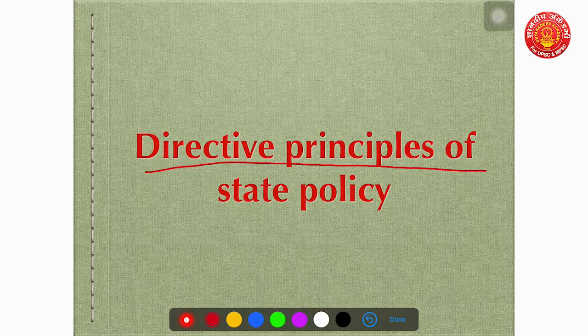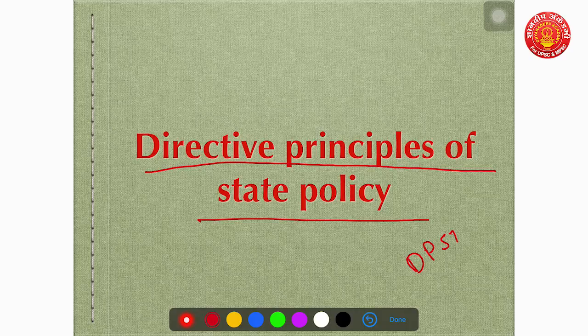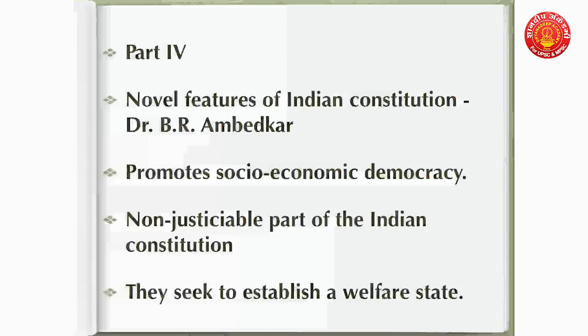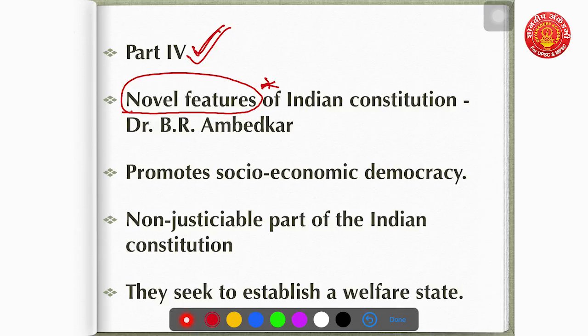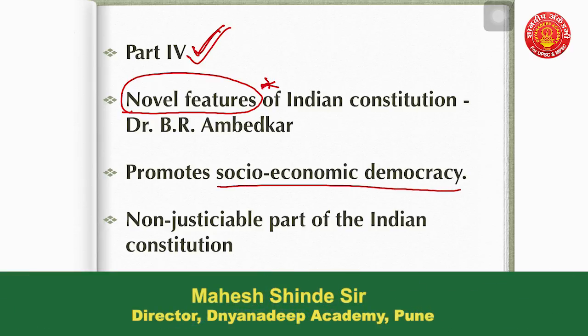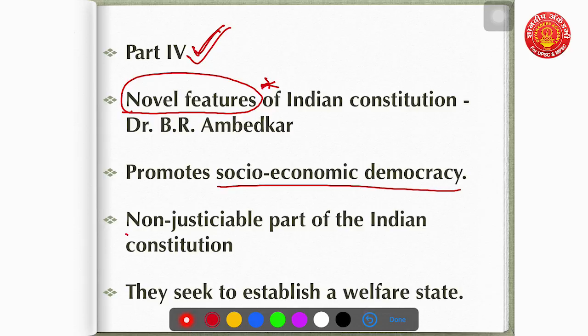The next important feature is the Directive Principles of State Policy, also famously called DPSPs. DPSPs are constitutional instructions given to states on administrative and executive matters to establish a welfare state. An important line to remember: DPSPs are fundamental in the governance of the country. DPSPs are given in Part Four of the Indian Constitution. DPSPs are called a novel feature of the Indian Constitution — very important for prelims. DPSPs promote socio-economic democracy, whereas Fundamental Rights promote political democracy.